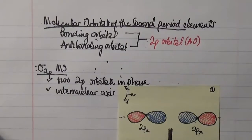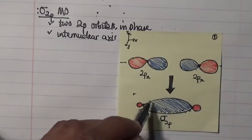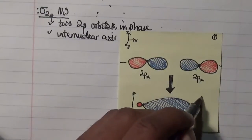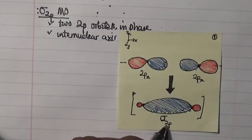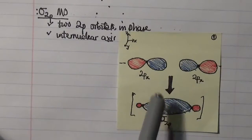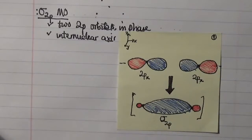As the in-phase orbitals get closer together, they form a large electron density between the two nuclei. This new electron density results in a new molecular orbital called the sigma 2p molecular orbital, produced by a head-to-head recombination, thereby forming a sigma 2p chemical bond.